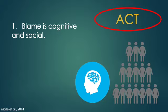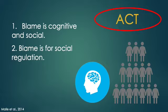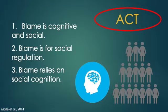Blame at the private and public levels have different sources, and social factors should be understood as separate from cognitive processes related to blame. However, in their model, social factors do constrain cognitive processes of blame. The model also stipulates that blame functions to modify human behavior — it encourages people to follow norms and serves as social regulation.